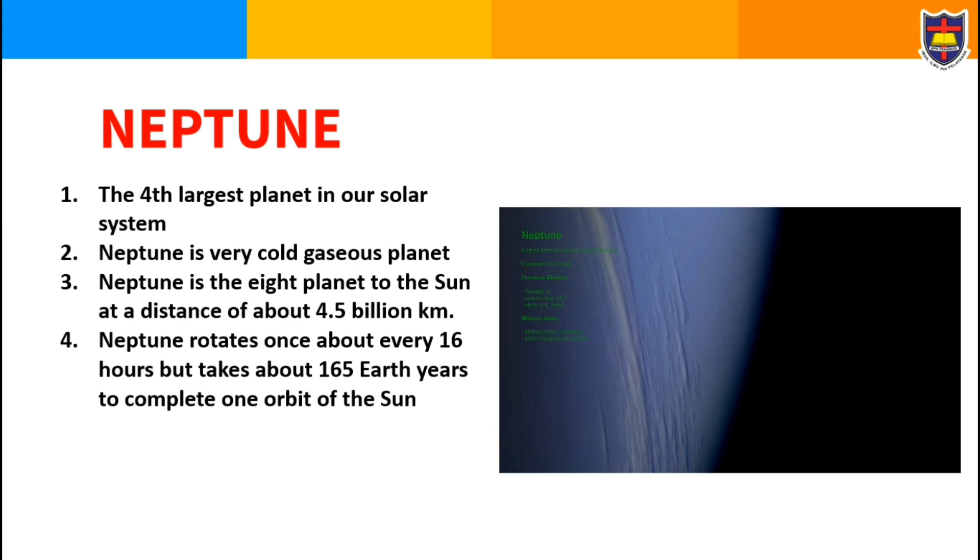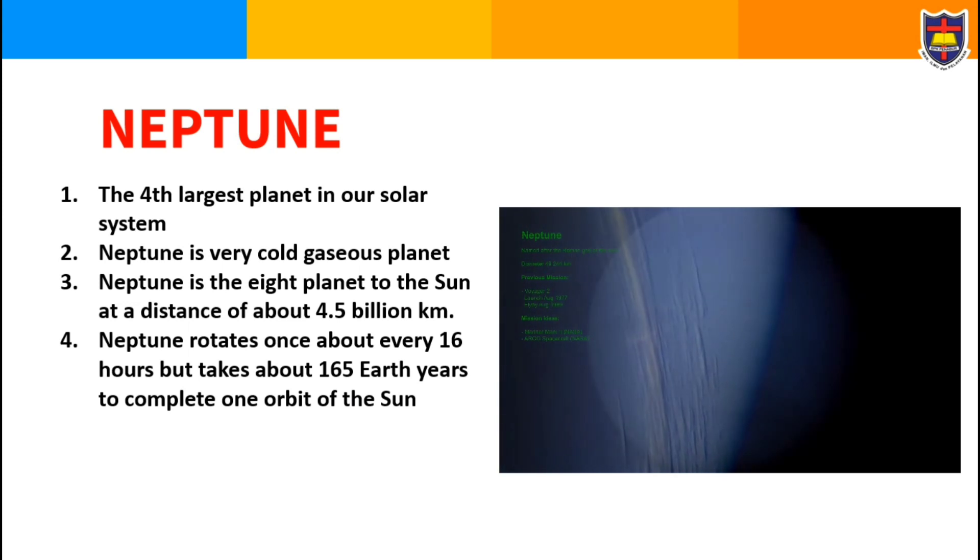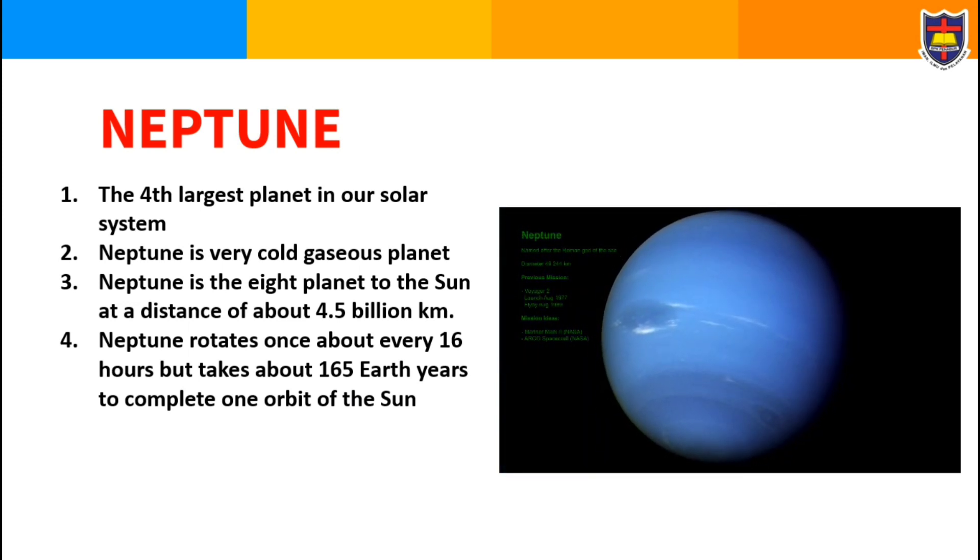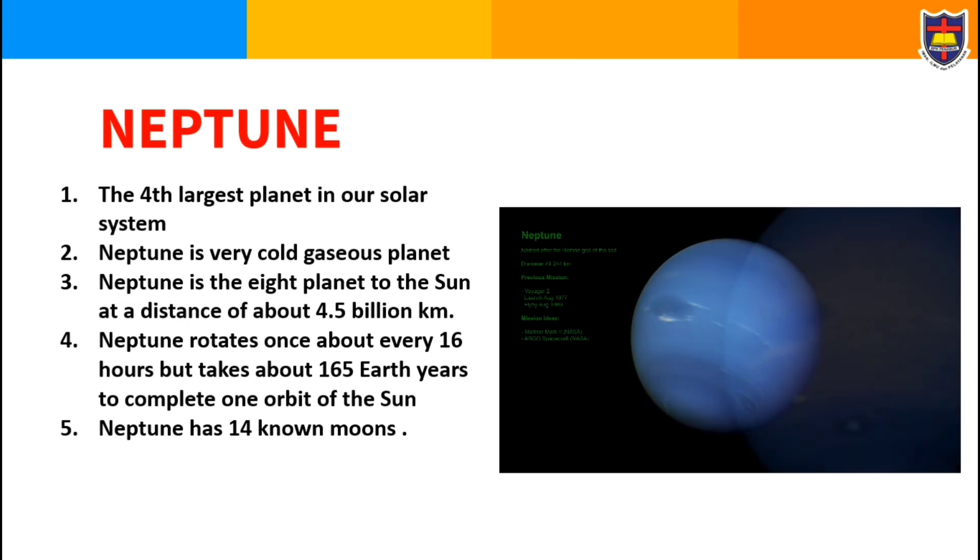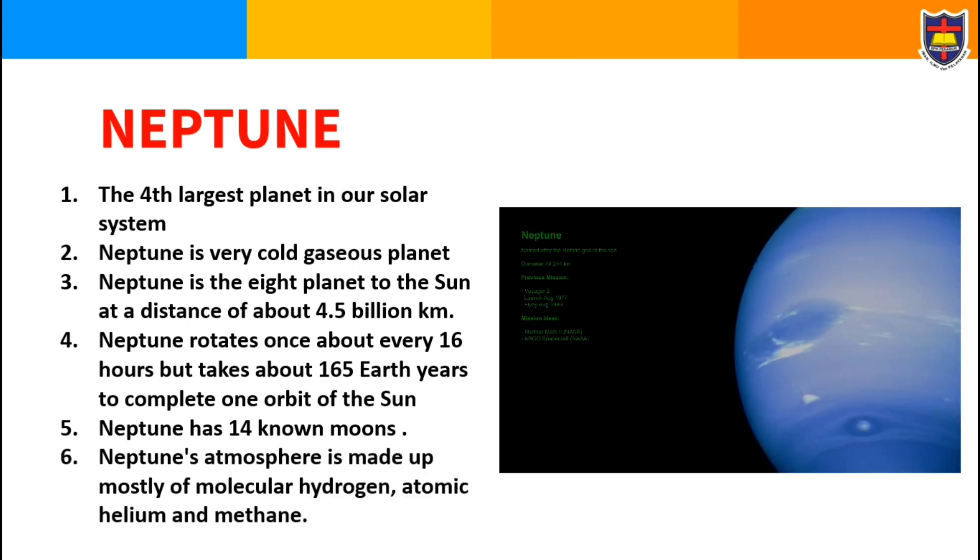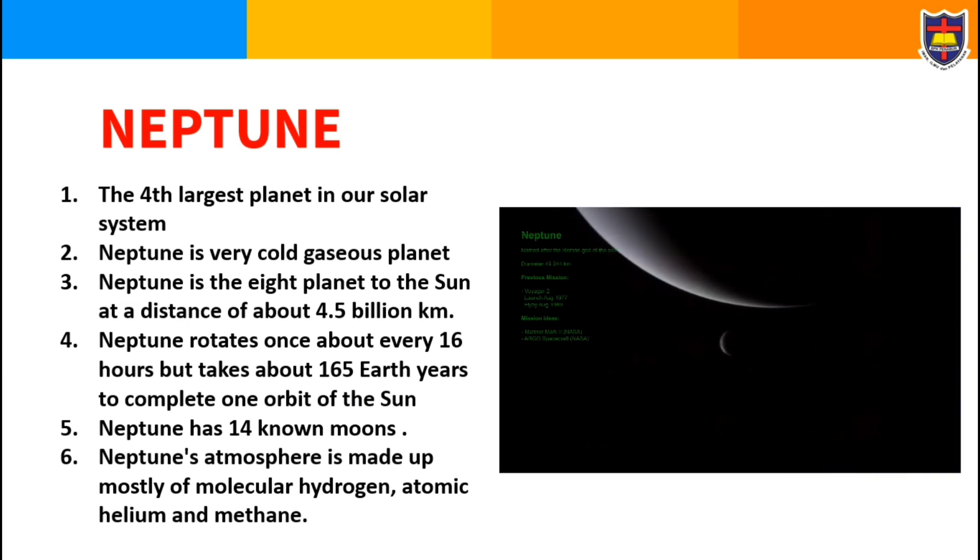Neptune rotates once about every 16 hours but takes about 165 years to complete one orbit of the Sun. Neptune has 14 known moons. Neptune's atmosphere is made mostly of molecular hydrogen, atomic helium, and methane.